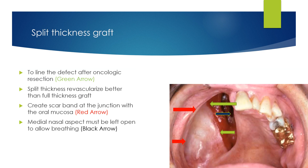To cover the sensitive respiratory epithelium and improve wound cleansability, a split thickness graft must be done. The green arrow shows the border of the skin graft lining the defect. Split thickness graft is better than full thickness graft because it revascularizes more easily. The red arrow delineates the scar band formed at the junction with the oral mucosa — this band will help the obturator retain much better. The black arrow shows the medial aspect of the nose, which must be left open to allow for breathing.